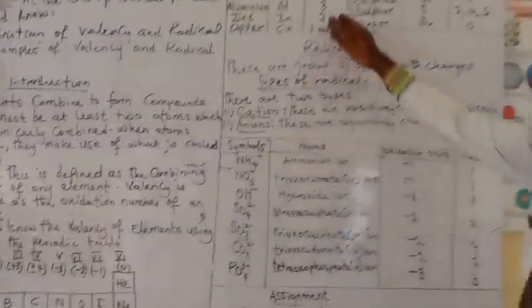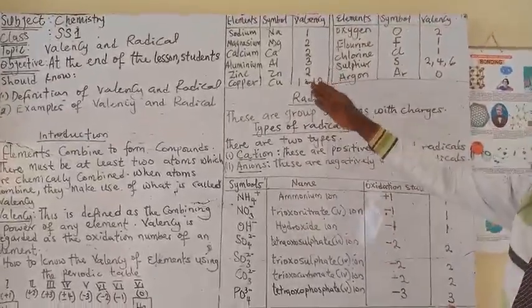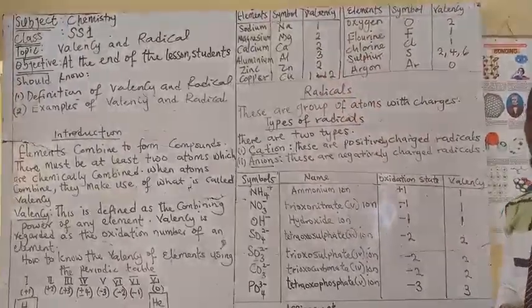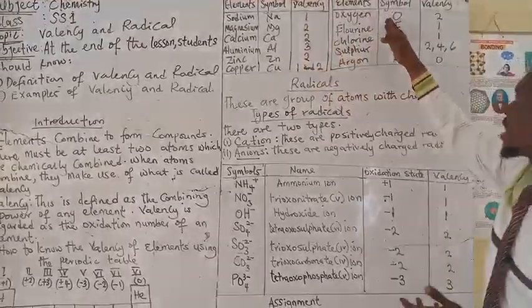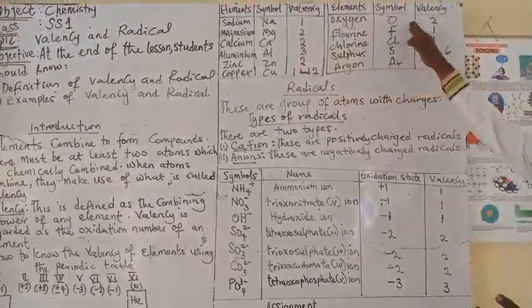On the board here, you have some elements, their symbols and their valency. You can see these are metals and these are their valency. These are some non-metals and these are their valency.